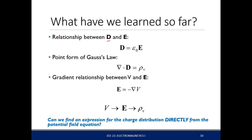The relationship between D and E is defined by epsilon in free space. If we are in a dielectric, this becomes epsilon. The point form of Gauss's law is just this: del dot E is equal to rho_v, the charge distribution. So the divergence of your flux density is the charge distribution, rho_v. The relationship between V and E is defined by the gradient operator. So if you take the gradient of the potential function, you get the electric field.